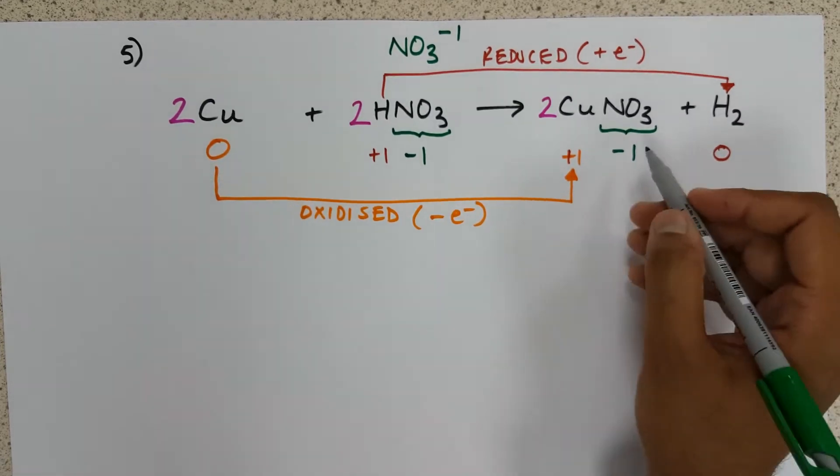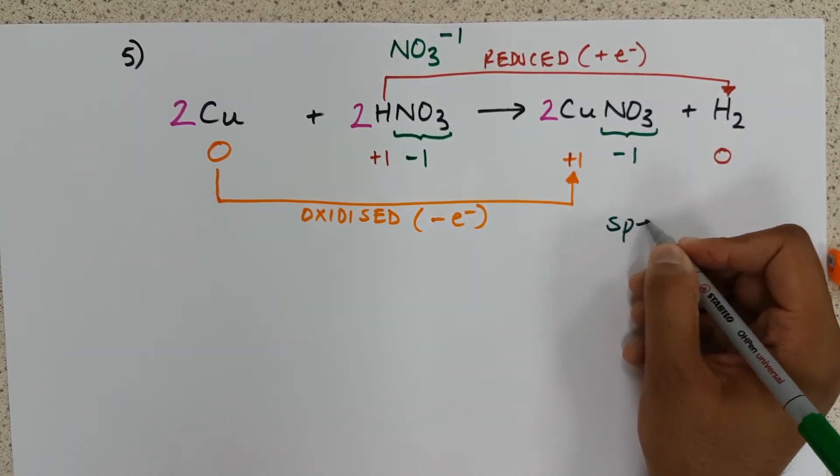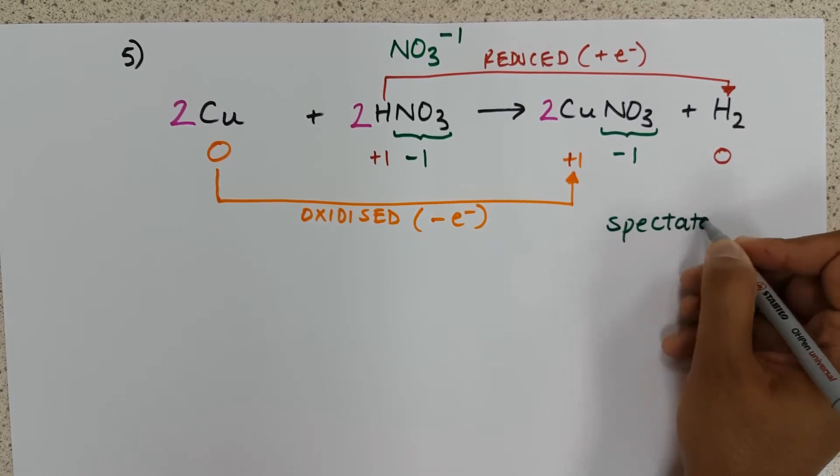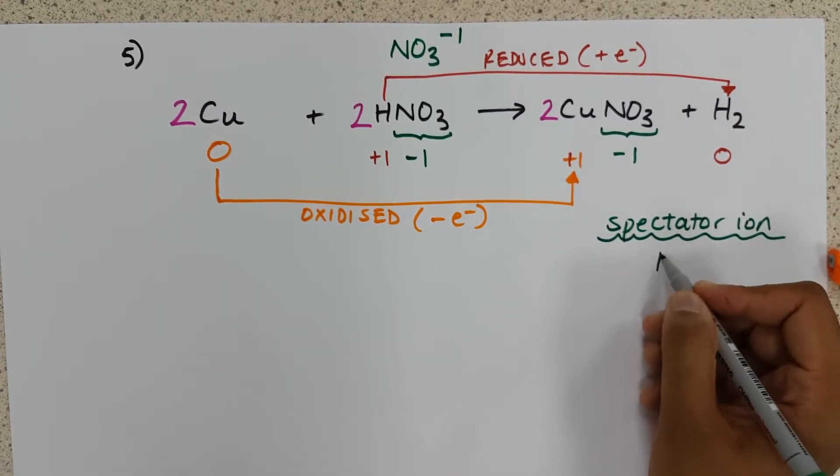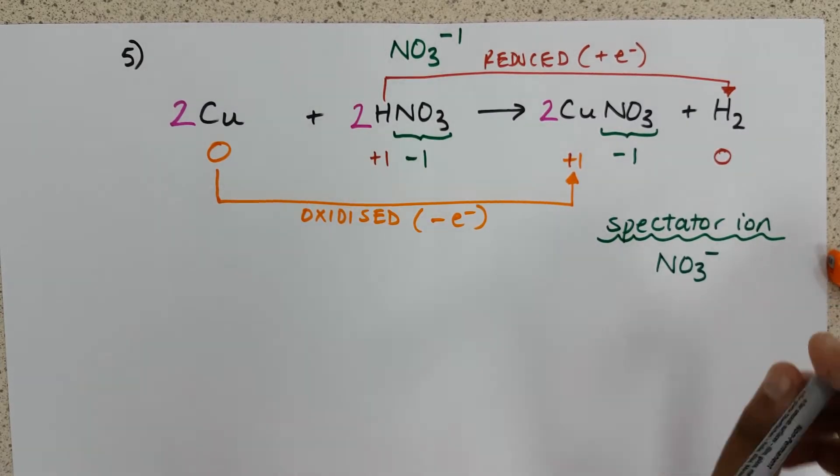And the nitrate ion, we can see, is unchanged. So we can identify it as our spectator ion in this reaction.